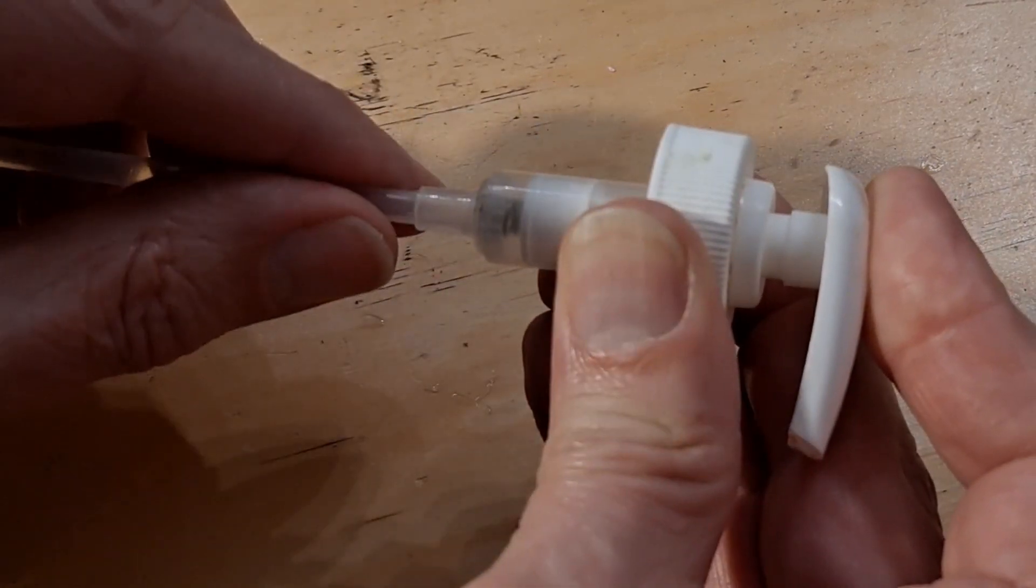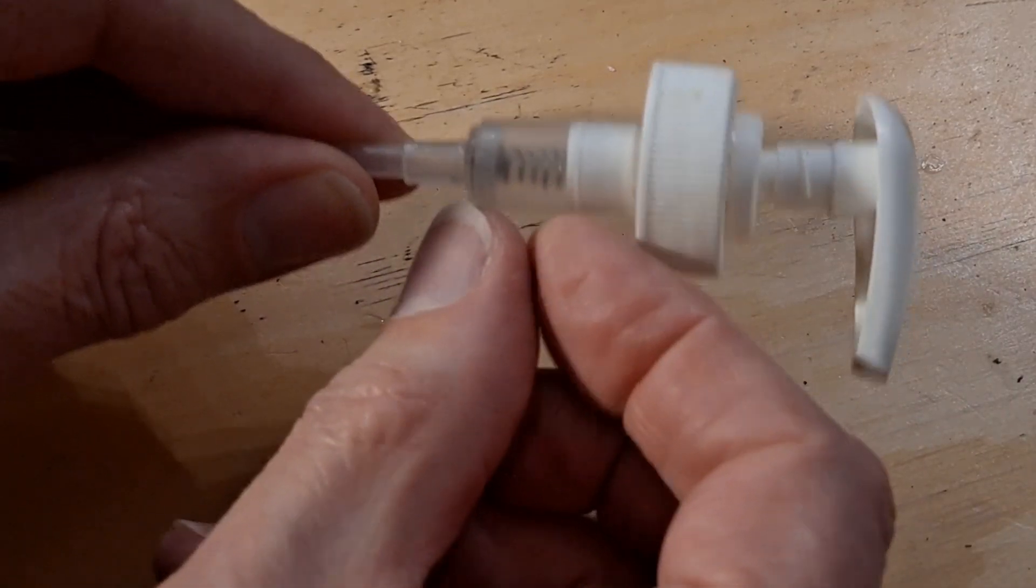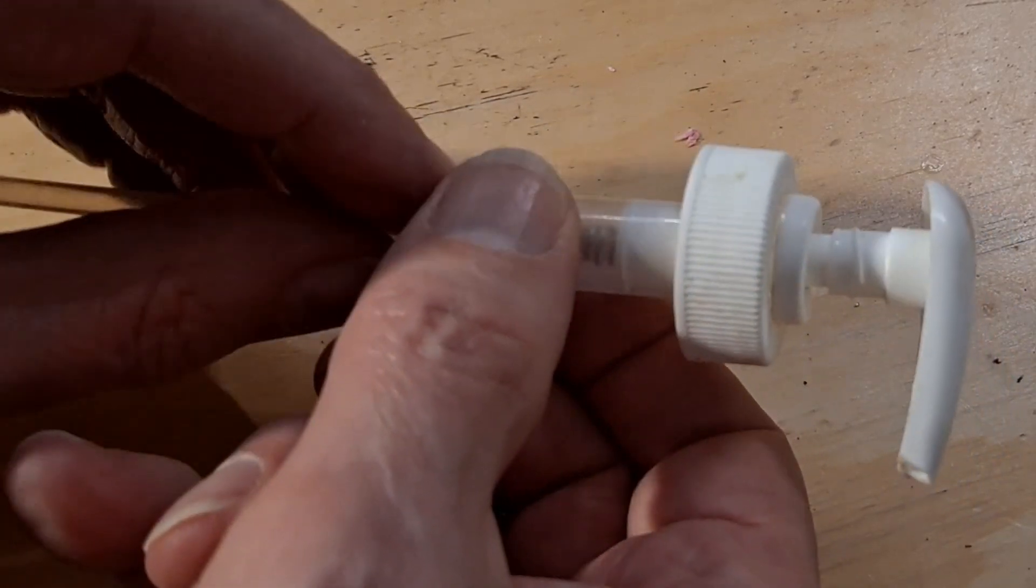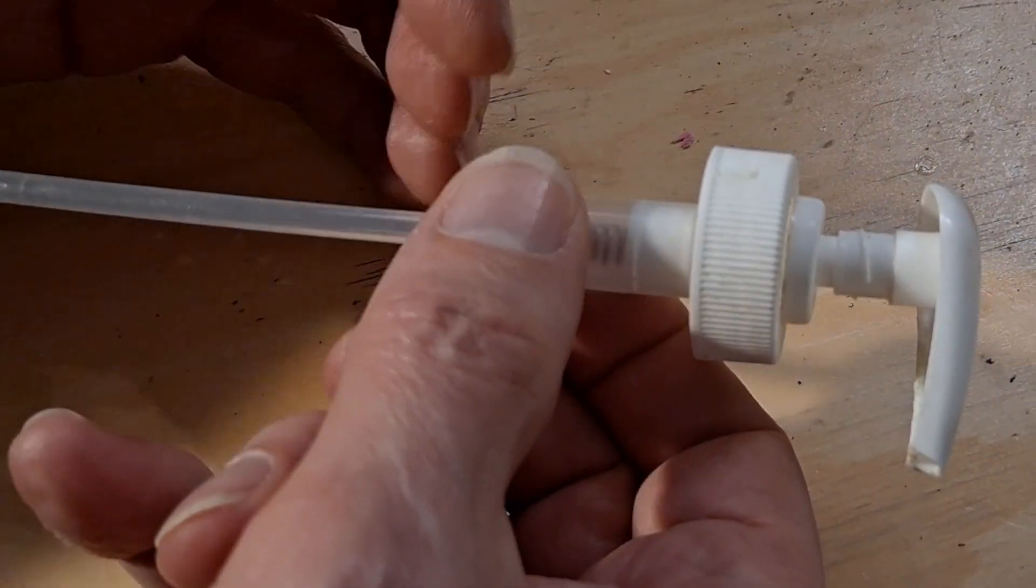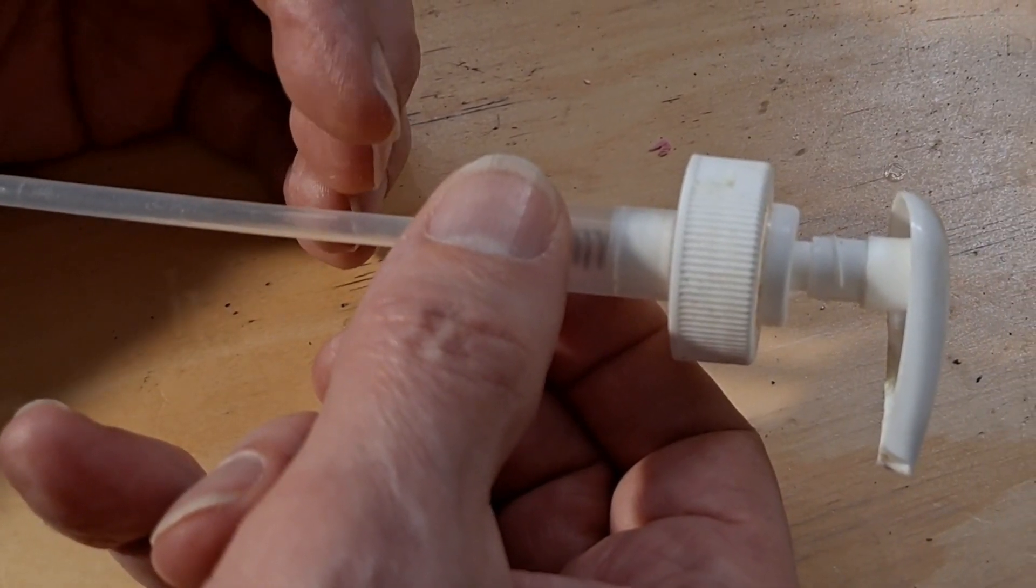The important bit is when you release it, that creates a partial vacuum there. So the liquid at this end is pushed up the tube by the air pressure outside, normal air pressure.